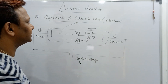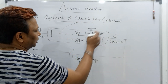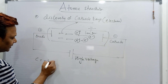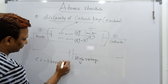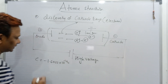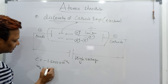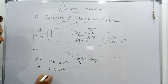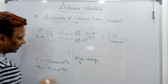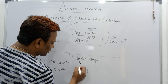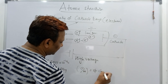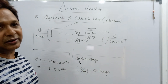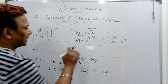Now the exam questions about cathode rays: the charge of the electron is minus 1.602 × 10⁻¹⁹ coulombs. The mass of the electron is 9.1 × 10⁻³¹ kg. The ratio of e by m is called the specific charge. The specific charge of the electron can be calculated from these values.